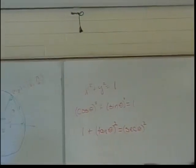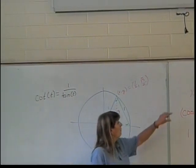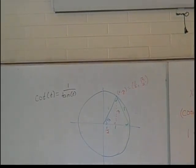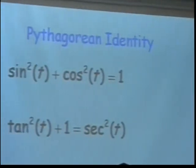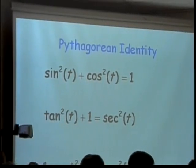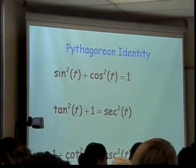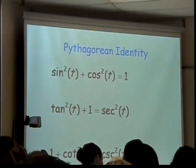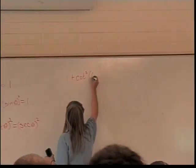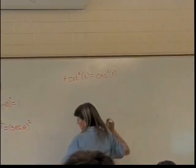What do you think I'm going to divide by to get the next Pythagorean identity? If I take this and divide by sine squared of theta, then I will end up with this next one, which is one plus cotangent squared of t equals cosecant squared of t. And I'm probably going to need to write that, because there's a lot of people on that side who can't see it.